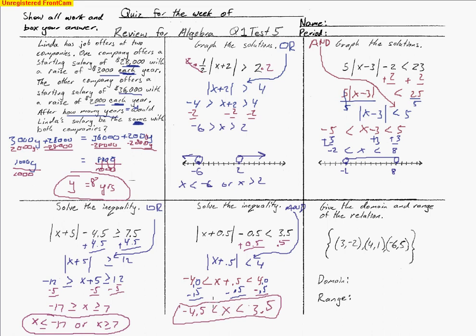We'll see this and statement format again with the domain and range problems. Domain represents the x values, range represents the y values. For a discrete relation, you just list the x values — 3, 4, negative 6 — then list the y values — negative 2, 1, 5. That's all you do.